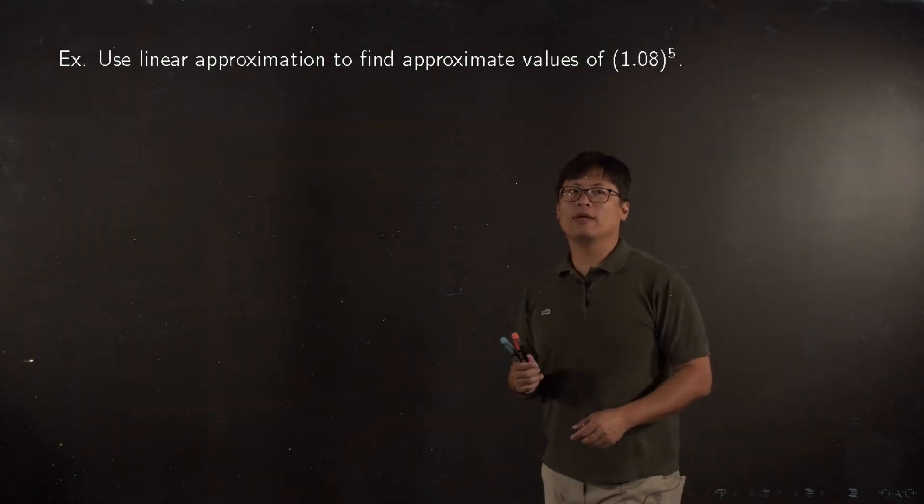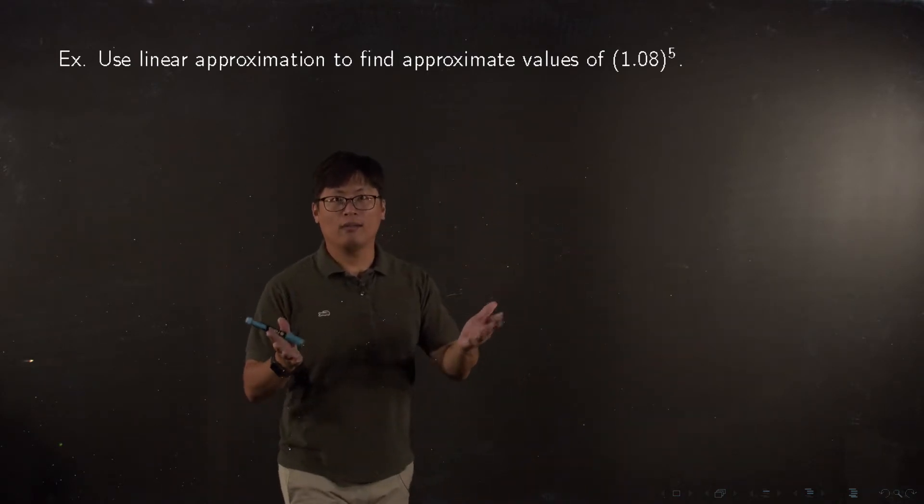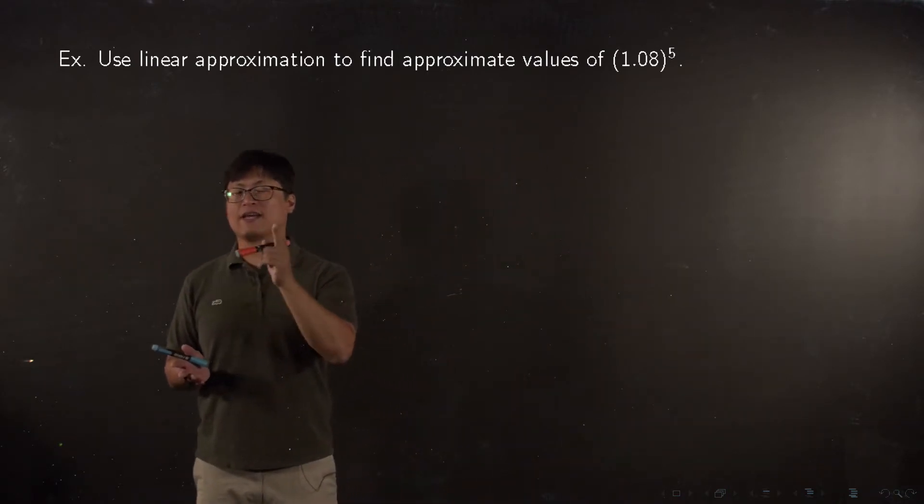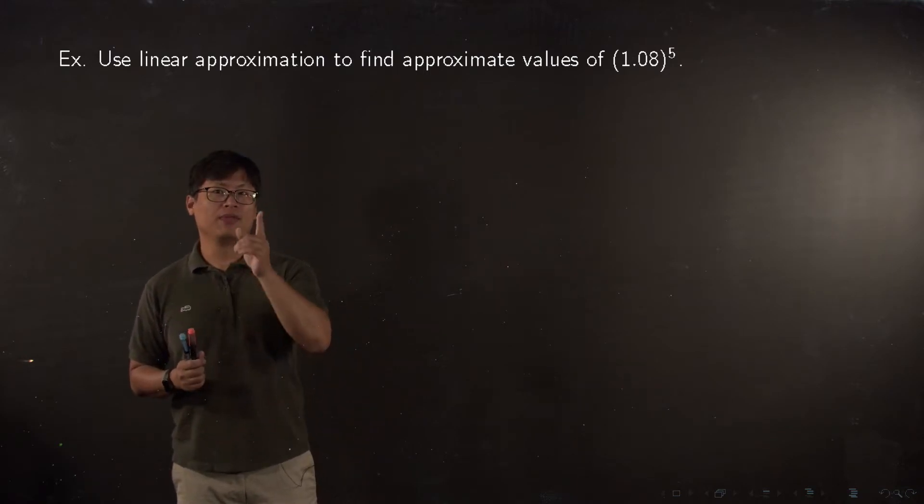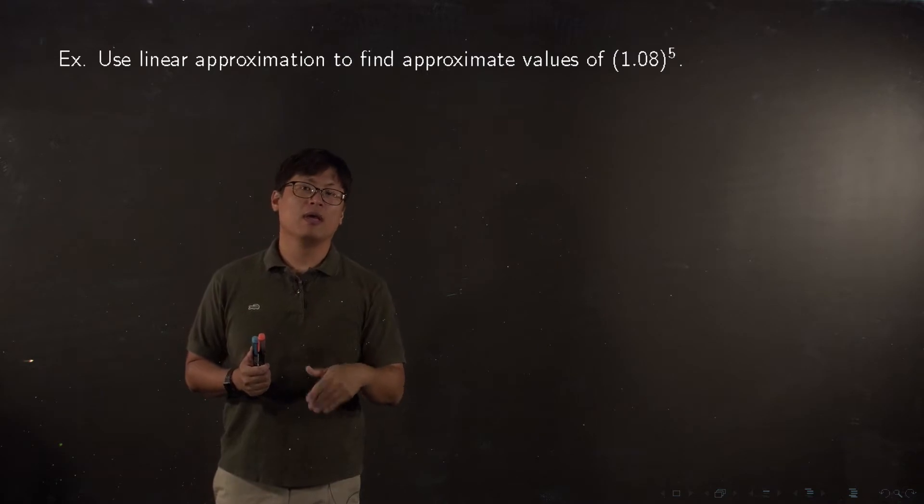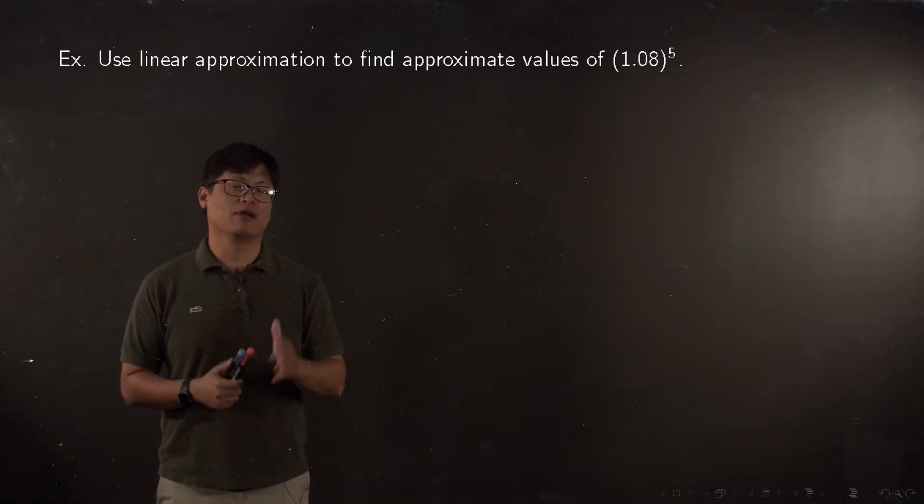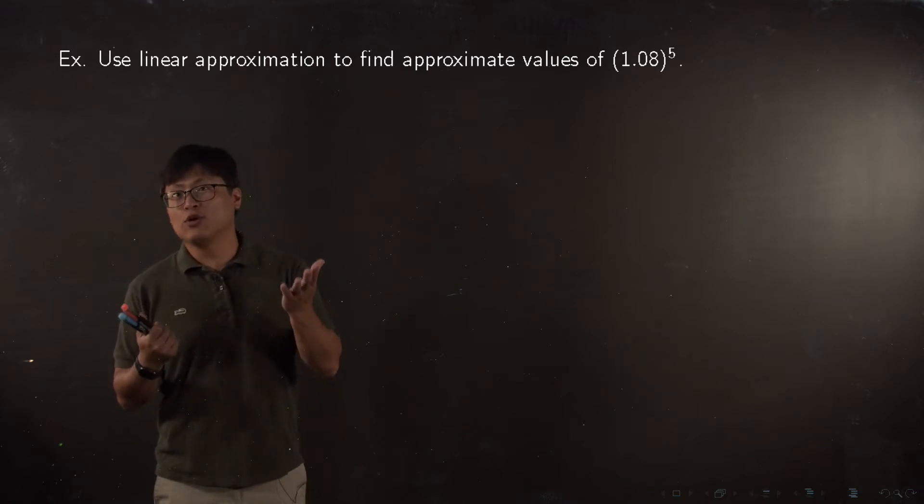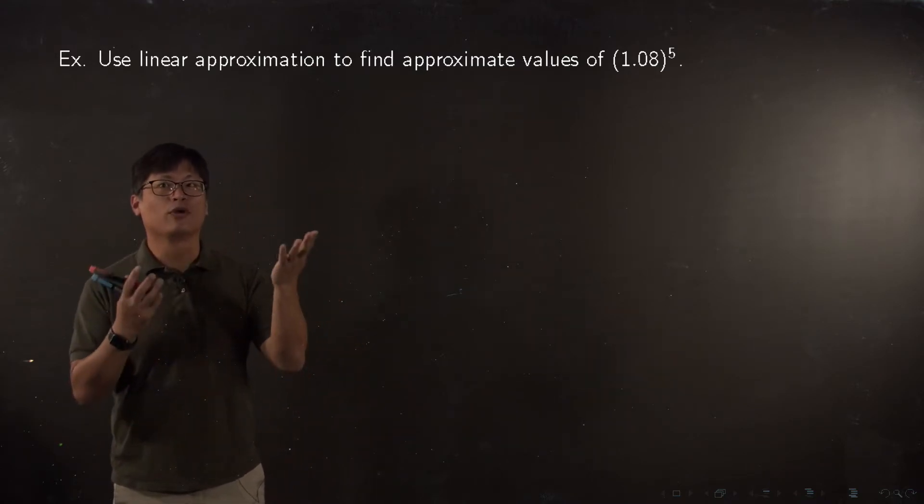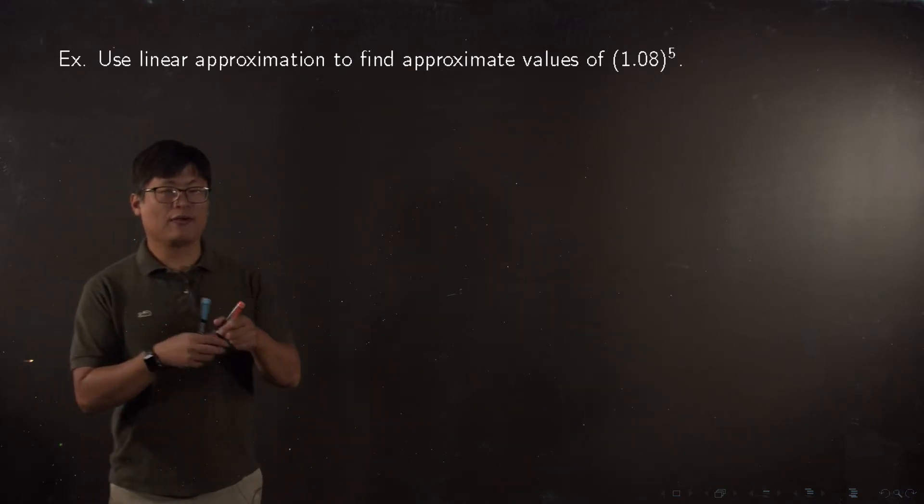Let me give you one more problem. Look at 1.08 to the fifth. You can try to find the exact value by multiplying 1.08 five times, but be careful—if you make a silly mistake, you cannot get the exact value. It's doable, but we don't have to get that exact value. We can use the linear approximation.